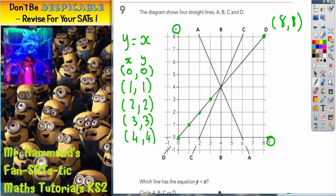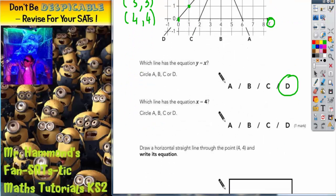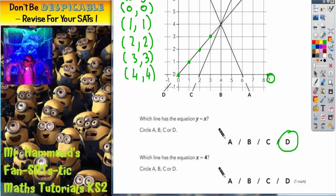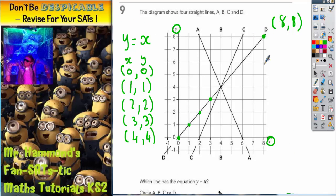Let's choose a different colour for the second part of the question. It then says which line has the equation X equals 4. Well, again, let's do some X and Y coordinates. Well, the X coordinate has got to equal 4. So if we're setting up a series of coordinates, the X coordinate every time has got to equal 4. So this is going to be 4. This is going to be 4. This is going to be 4. And this is going to be 4. The Y coordinate can be anything.